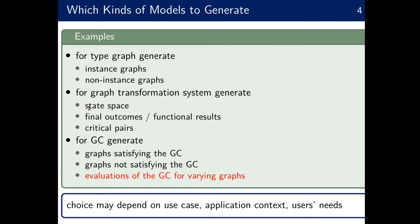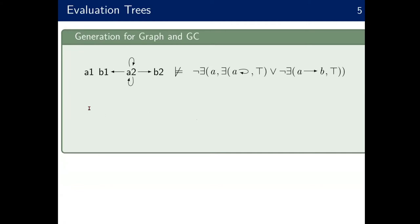What to generate depends on the use case and application context. I argue that these evaluations are very helpful for understanding graph conditions. We capture such evaluations using evaluation trees. These evaluation trees represent all possible steps that could happen in an evaluation of a graph condition with respect to a graph. Here, again, is the same example we have seen before, and I'll show how for this given graph and graph condition an evaluation tree could be generated.